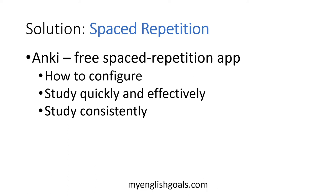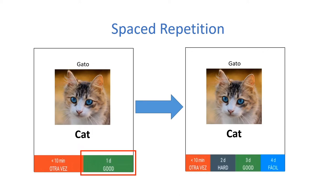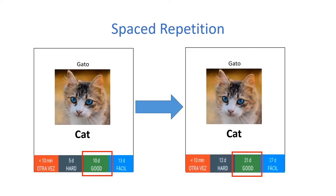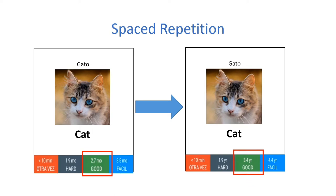En este curso yo te voy a ayudar a hacer todo esto de la forma más fácil posible. Para darte una idea más visual de cómo funciona la repetición espaciada: imaginamos que has aprendido la palabra gato en inglés, cat. Lo repasas este mismo día. Luego te tocará repasarlo mañana, en un día. Después, si todavía lo recuerdas, te tocará repasarlo en tres días. Y luego, si te acuerdas bien, será una semana, una semana y media, dos semanas, tres semanas. Con tiempo ya podrás recordar estas palabras durante meses sin tener que repasarlas, y con más repasos llegarás al punto de recordarlas durante años.